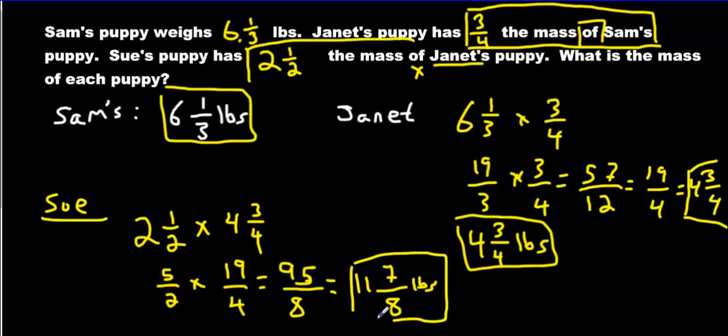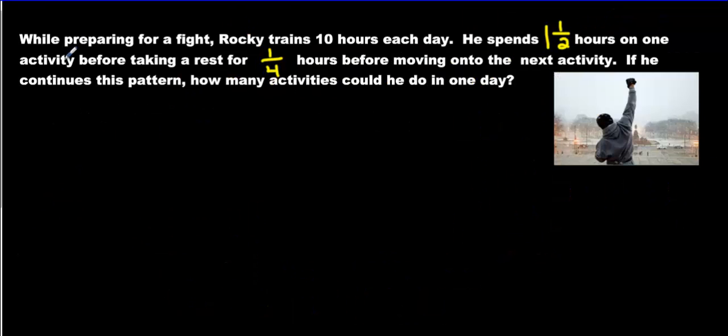We got all our numbers, guys. That was a tough one. Let's move on. While preparing for a fight, Rocky trains 10 hours each day. He spends 1.5 hours on one activity before taking a rest for 1.4th before moving on to the next one. If he continues the pattern, how many activities could he do in one day?